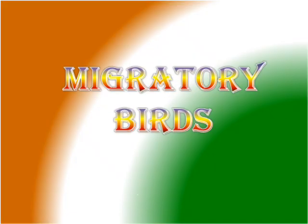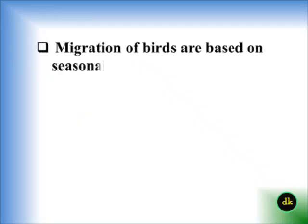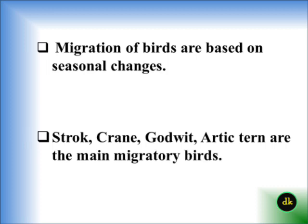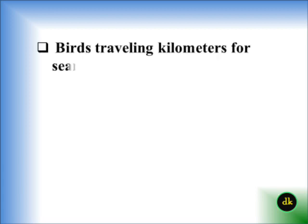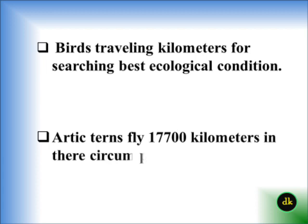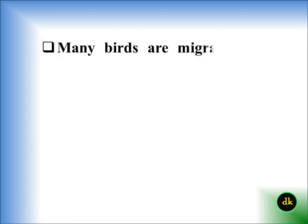Migratory birds migrate based on seasonal changes. Stork, crane, and arctic tern are the main migratory birds, traveling thousands of kilometers to reach the best ecological conditions. The arctic tern flies 70,000 km in its circumpolar migration.